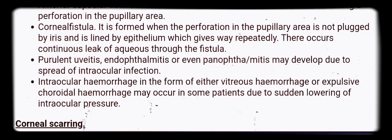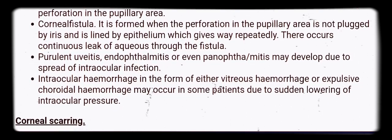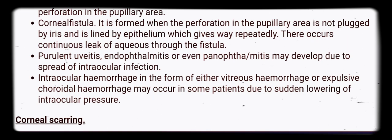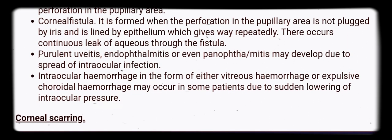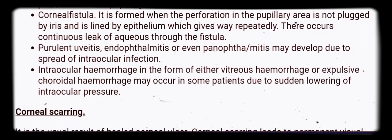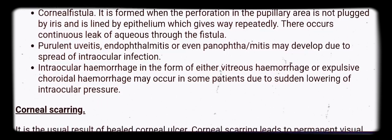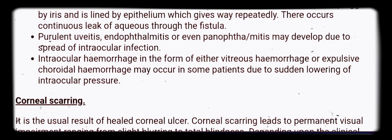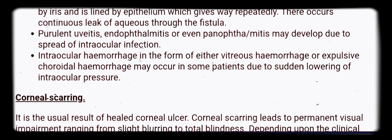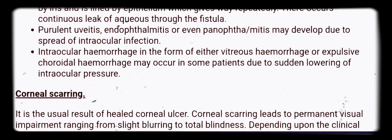Corneal fistula is formed when the perforation in the pupillary area is not plugged by iris and is lined by epithelium, which gives way repeatedly. This results in a continuous leak of aqueous through the fistula.